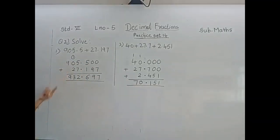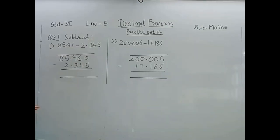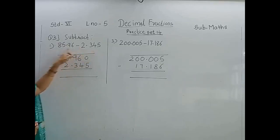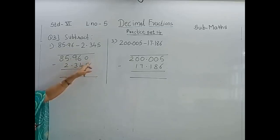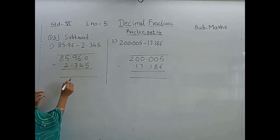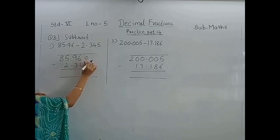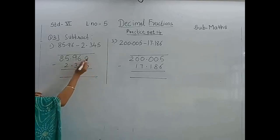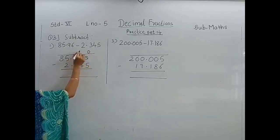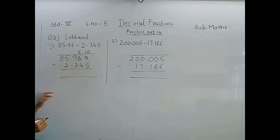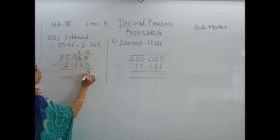Students, understand how to do addition with decimal fractions. Now we will solve question number 3: subtract. Here we have to subtract 2.345 from 85.96. Arrange the numbers properly and line up the decimal point. Write down the numbers according to their places and start subtraction from the smallest place. Can we subtract 5 from 0? No. So we have to borrow 1 from 6. Cut down the 6, write down 5, and put 1 to get 10. 10 minus 5 is 5.